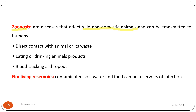Zoonotic diseases can be transmitted to humans by direct contact with the animal or its waste, by eating or drinking animal products, or by blood-sucking arthropods. Non-living reservoir infections include contaminated soil, water, and food, which can carry and transmit infectious agents to humans.